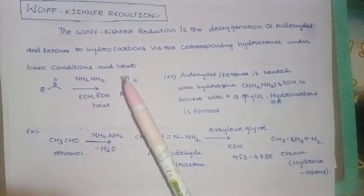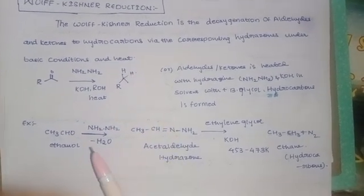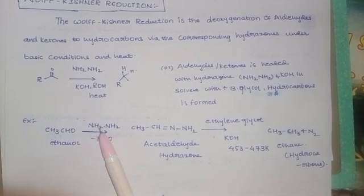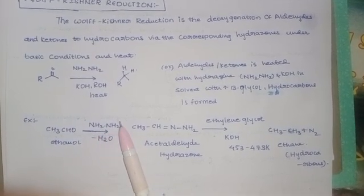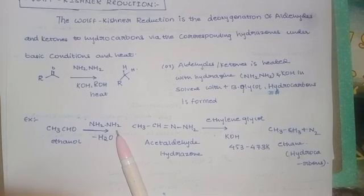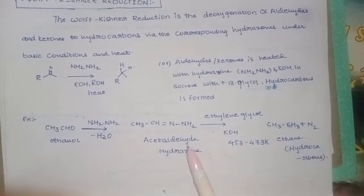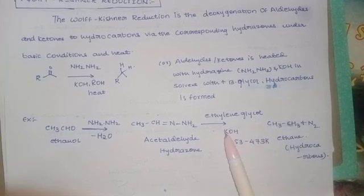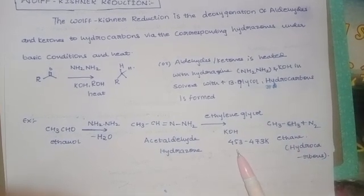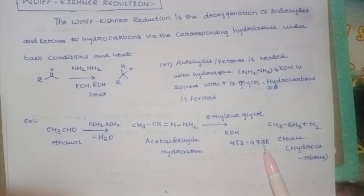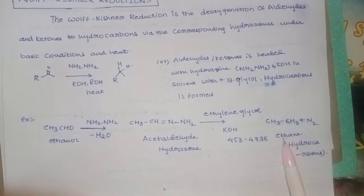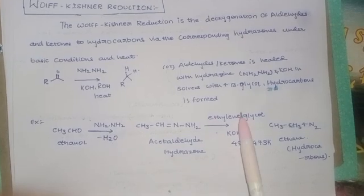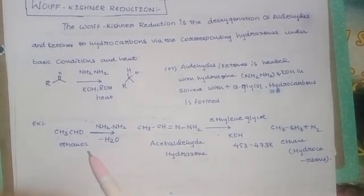Here is an example: ethanol in the presence of hydrazine (NH2-NH2), with loss of a water molecule, converts into acetaldehyde hydrazone. Then in the presence of ethylene glycol and KOH at a temperature of 453 to 473 Kelvin, it converts to ethane, which is a hydrocarbon. So the reagents here are very important to remember.